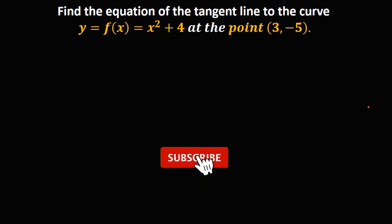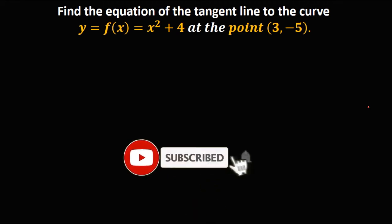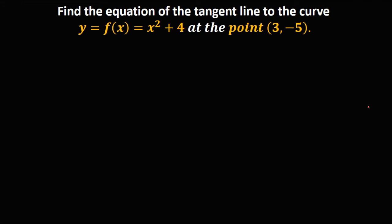Okay, so let's solve this problem. Find the equation of a tangent line to the curve y equals f of x, which is equal to x squared plus 4, at point (3, negative 5).